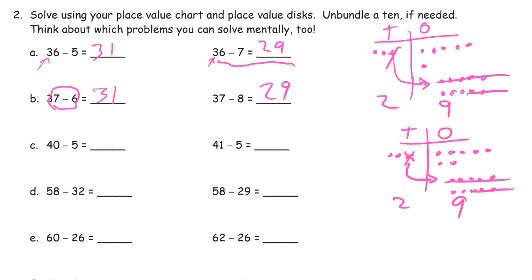If you think about it, our minuend is the same — 37 for both. If we take away 6, we have 31. But over here we're taking away 2 more, so our difference should be 2 less. 31 minus 2 is 29.